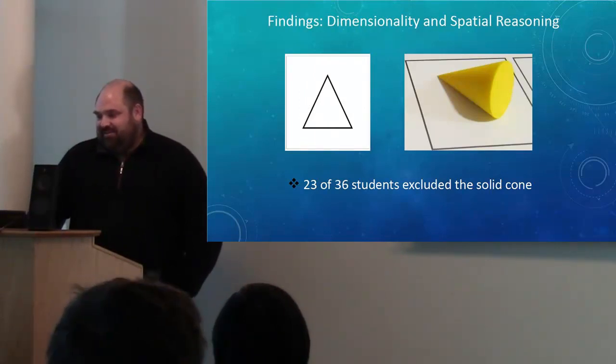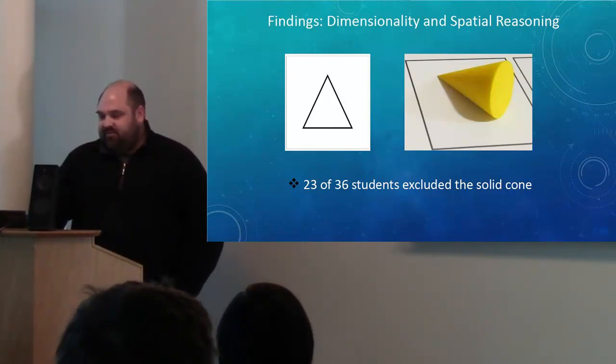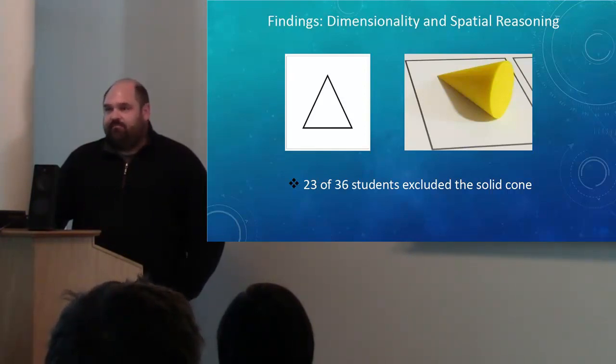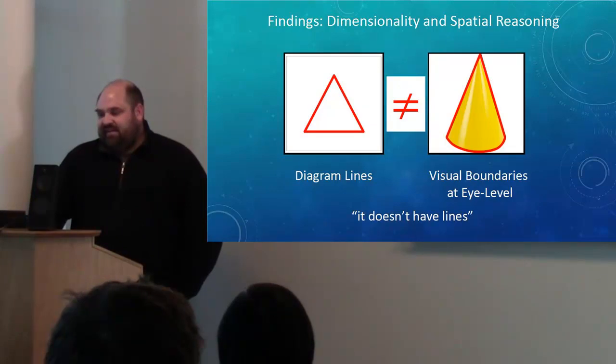Another difficulty children exhibited was with how projected surfaces were represented in the 2D line diagrams. This happened when some children described their reasoning about a cone, where the triangular face is projected toward the eye line with a curved volume. Children rejected the cone's triangular face because it doesn't have lines like the drawing. They did not interpret the visual boundaries of the curved surface of the 3D cone as equivalent to the lines in the 2D drawing.